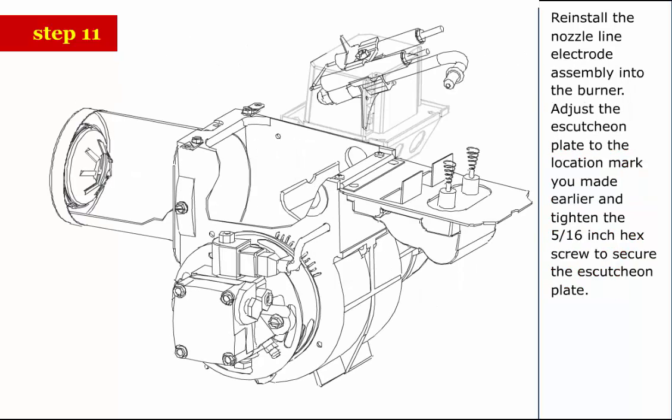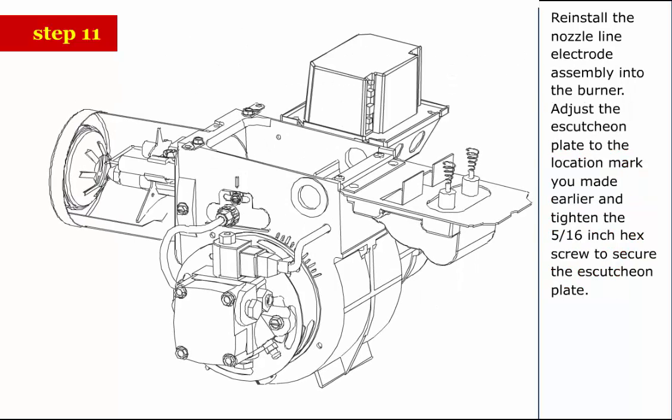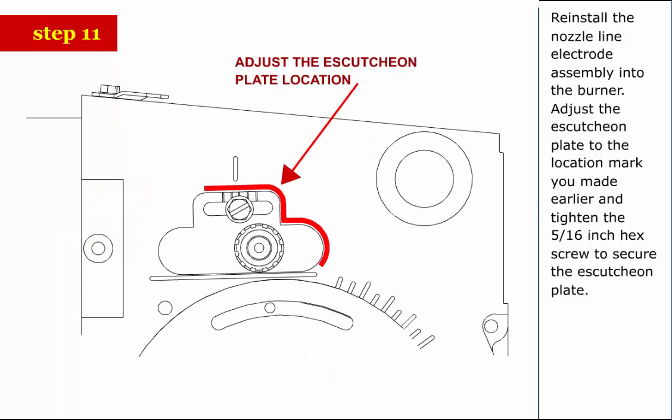Step 11: Reinstall the nozzle line electrode assembly into the burner. Adjust the escutcheon plate to the location mark you made earlier and tighten the 5 sixteenths inch hex screw to secure the escutcheon plate.